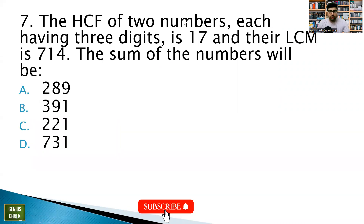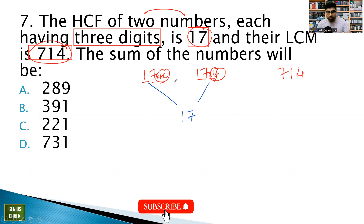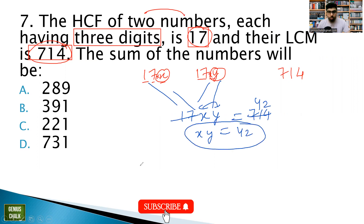Next important question: the HCF of two three-digit numbers is 17 and their LCM is 714. Let the numbers be 17x and 17y. Their LCM = 17xy = 714, so xy = 42. We need co-prime pairs (x, y) such that both 17x and 17y are three-digit numbers.